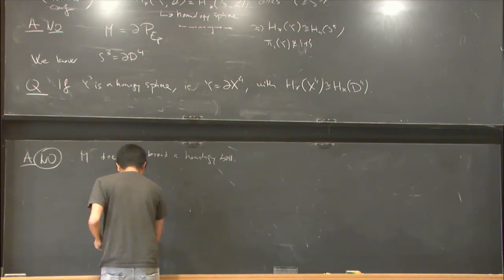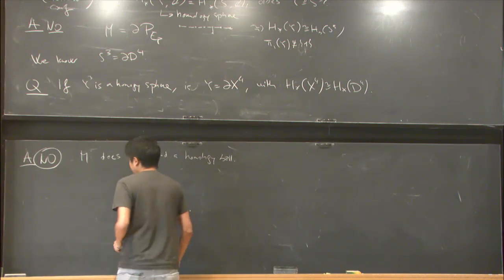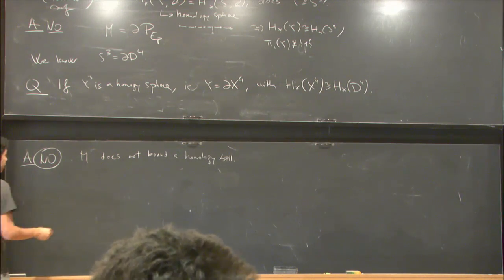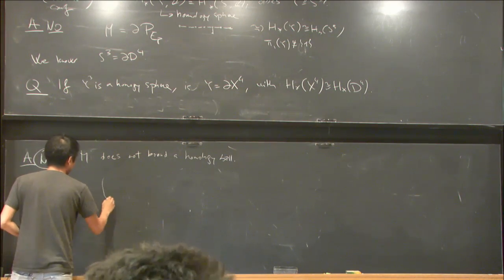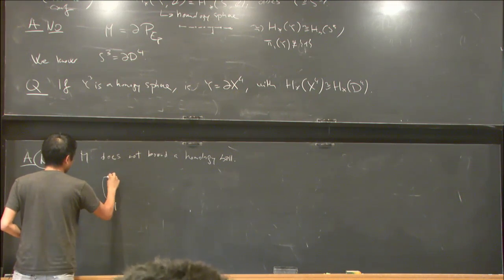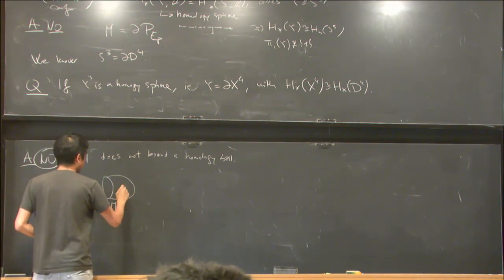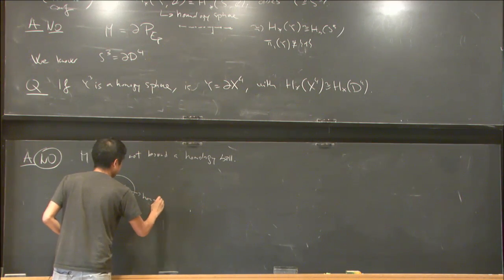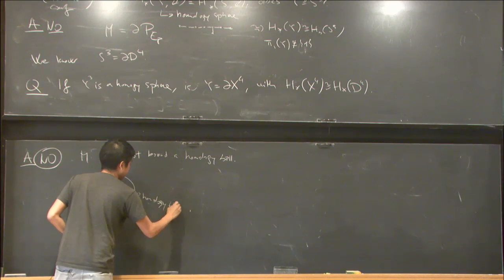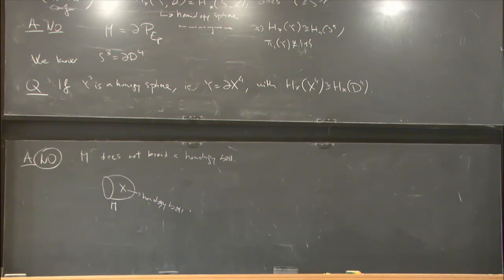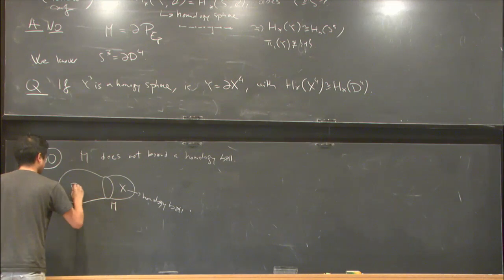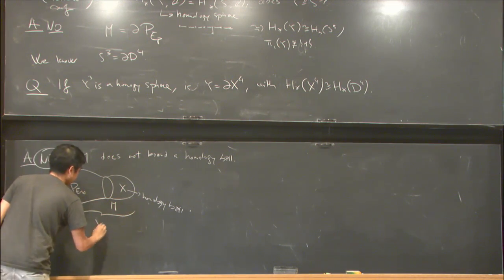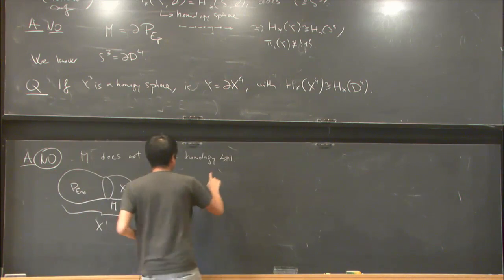How do you prove this? This requires some 4-dimensional topology. Suppose M bounds X, suppose that X is a homology ball. But we already know that M is defined as the boundary of the E8 plumbing. Let's call this manifold X'. Now you can check that X' is a closed 4-manifold.